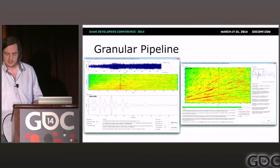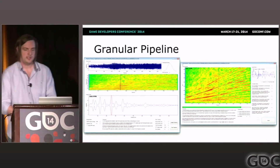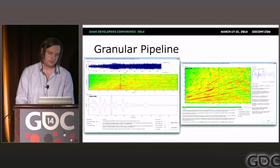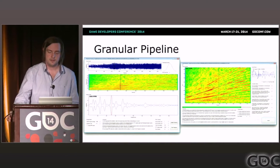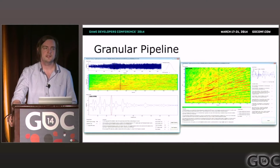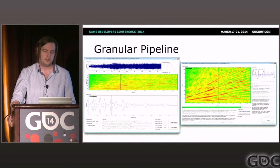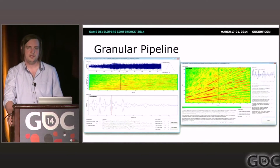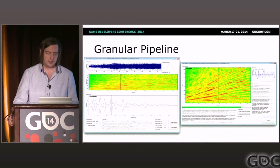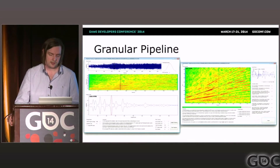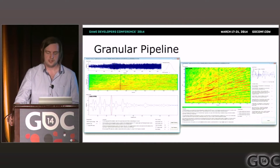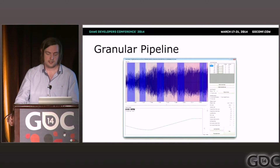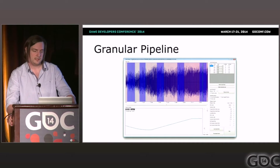Once we've recorded, mixed, and edited the assets, we take them into our granular pipeline. The first stage is frequency RPM detection — the sound designer guides this by selecting the fundamental frequency they want to track and tells the tool how many cylinders the engine has. The tool then figures out the pitch curve using auto-correlation and bias towards zero crossings to break the data into grains.